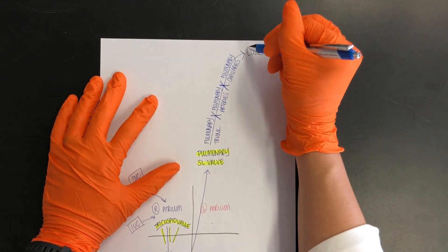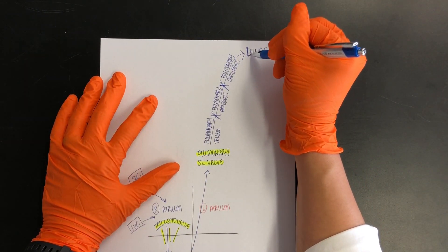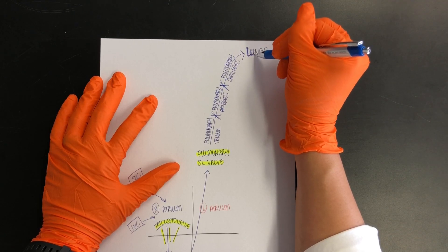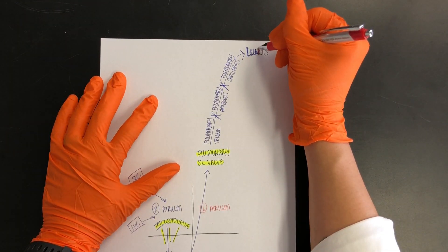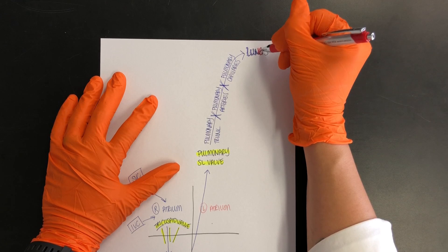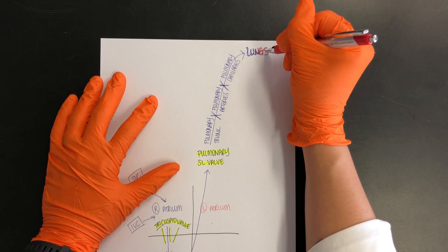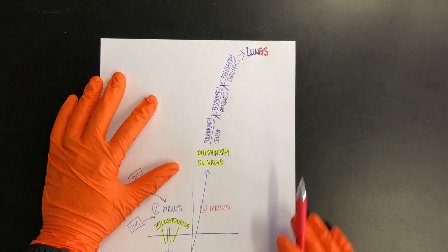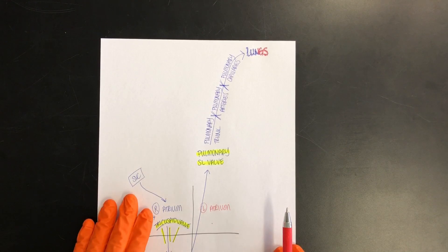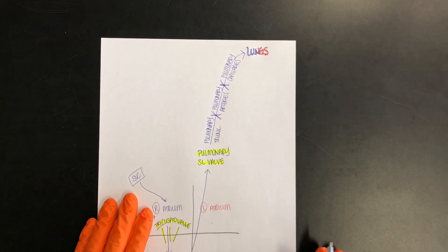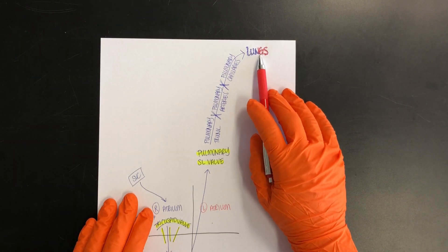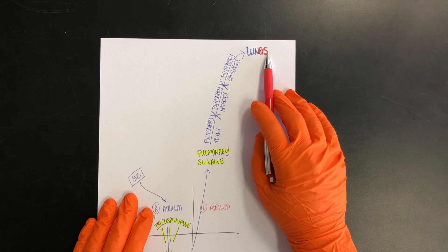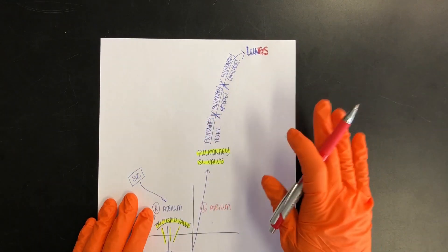Once we get to the lungs, I like to color code it like so. Now, why do you think I'm changing colors like this? Because this is where gas exchange occurs. The major gas exchange to deliver oxygen to the rest of the body. So we want to remind ourselves that the lungs, the capillary bed of the lungs, is where we transition from deoxygenated to oxygenated.